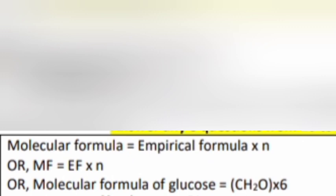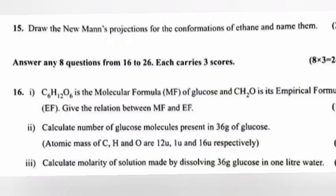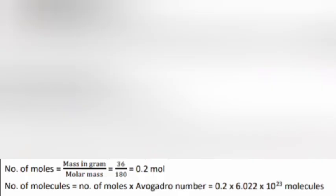Part 2: Calculate number of glucose molecules present in 36 grams of glucose. Answer: Number of moles = mass in grams / molar mass = 36 / 180 = 0.2 mol. Number of molecules = number of moles × Avogadro number = 0.2 × 6.022 × 10^23 molecules.